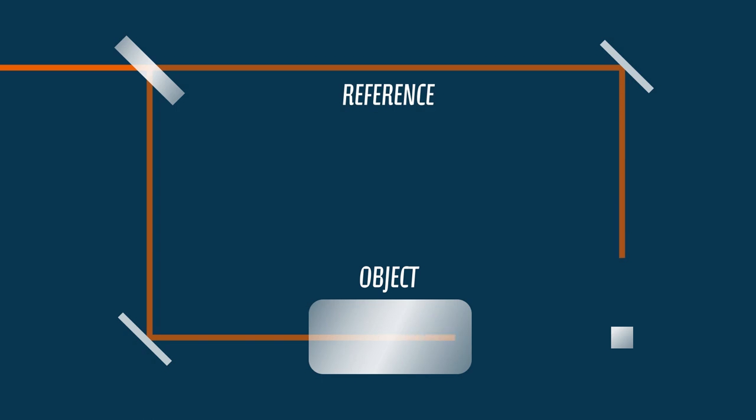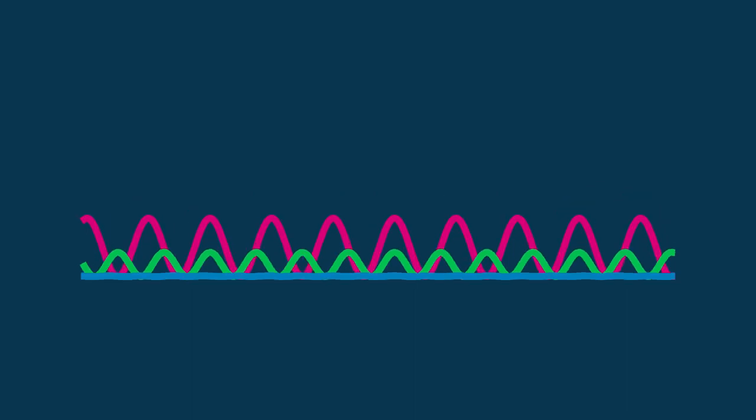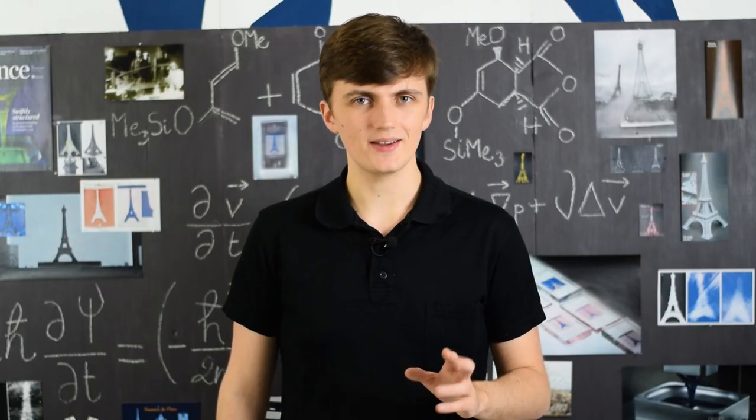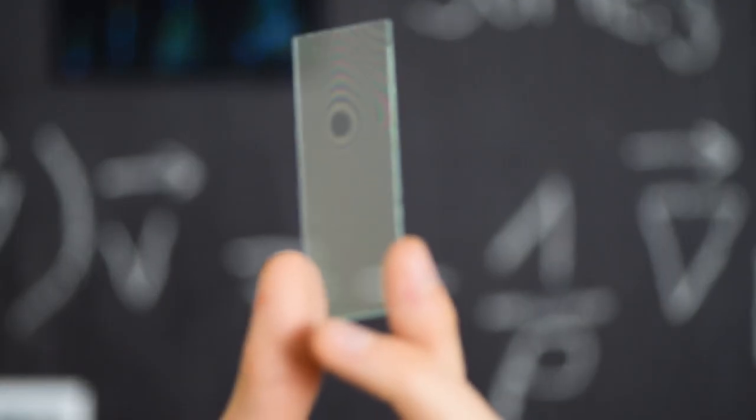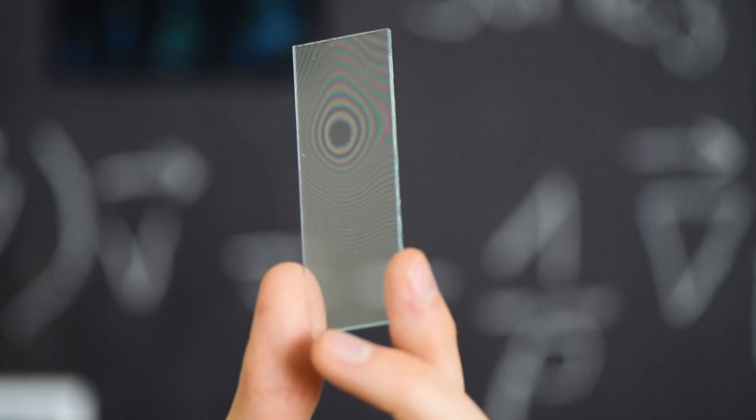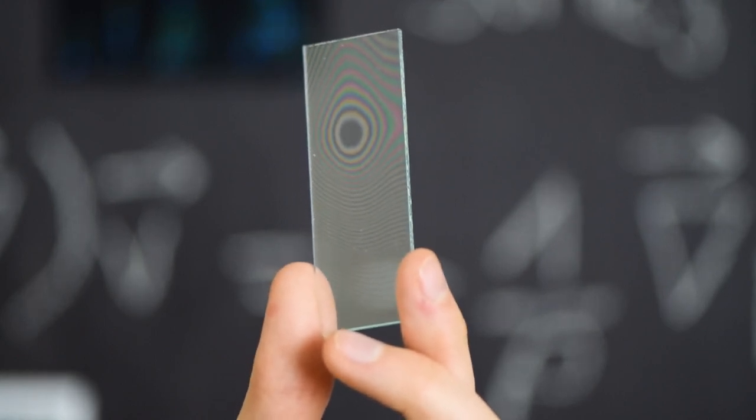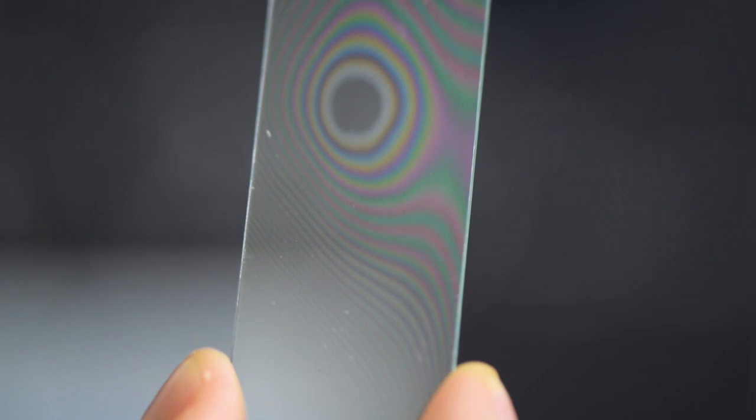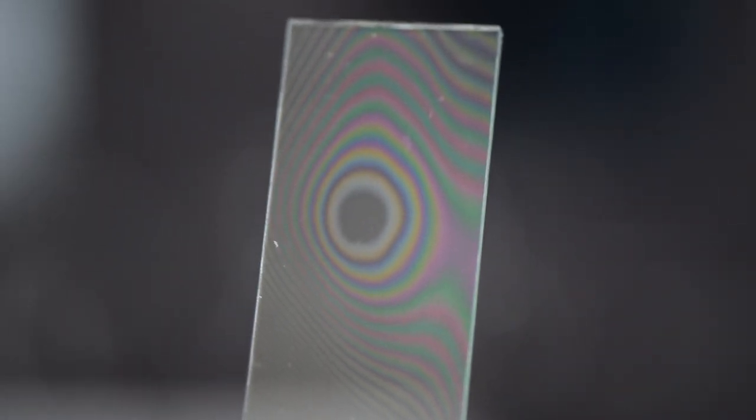An interferometer splits waves in two. One part goes through an object and is delayed with respect to the other part, which acts as a reference. When they meet again, they interfere, and we can deduce the delay from the shape of the pattern. And if you know the delay, you can find a length. Just like here, these colorful figures between the two glass slides are interference patterns. Seeing that allows us to know that they are separated by less than a micron, and a more precise experiment could give us a much better measurement.